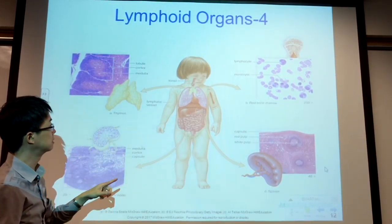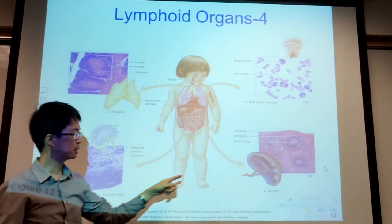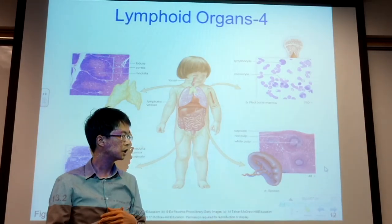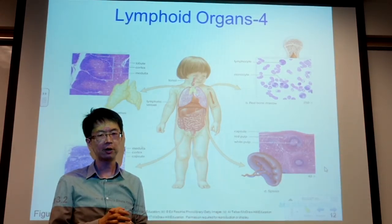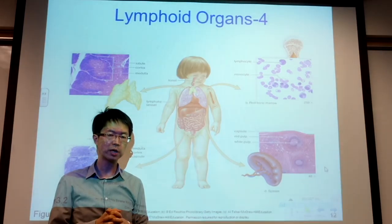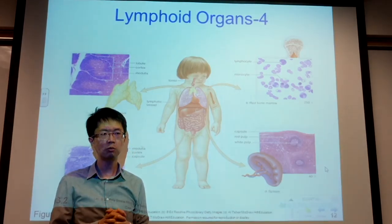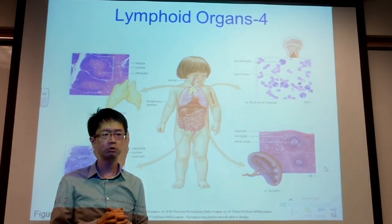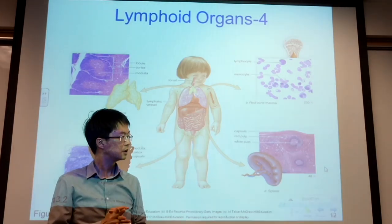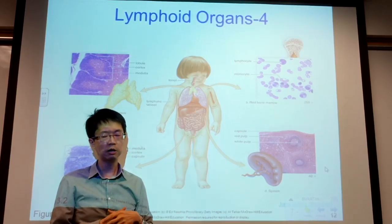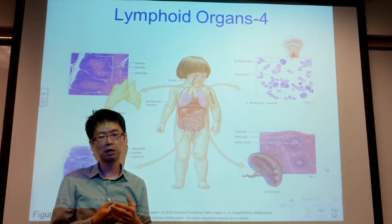Thymus and bone marrow are the primary lymphoid organs; lymph nodes and spleen are secondary. One function of the spleen — besides its lymphatic function where lymphocytes fight infection — is to break down old red blood cells. Spleen and liver are the organs that break down old red blood cells.